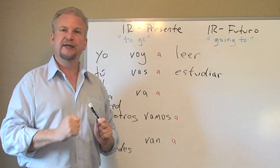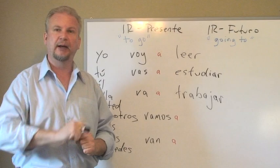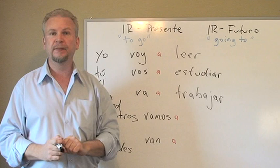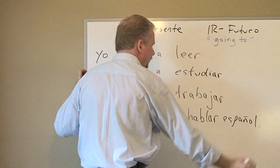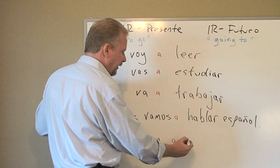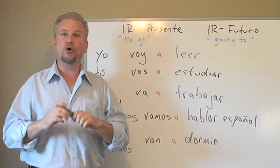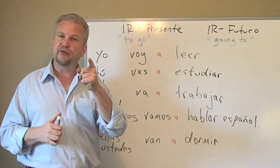Tú vas a estudiar — you're going to study. El va a trabajar, or ella va a trabajar, or usted va a trabajar — you are going to work. Future. Nosotros vamos a hablar español — we are going to speak Spanish. Ellos, ellas, and ustedes van a dormir — they are going to sleep, or you are going to sleep. Ellas van a dormir — they're going to sleep.